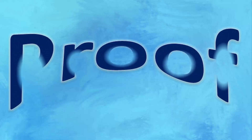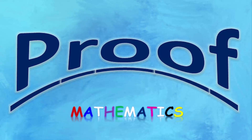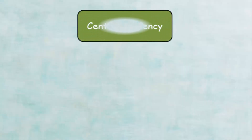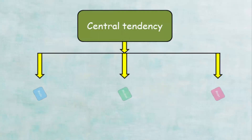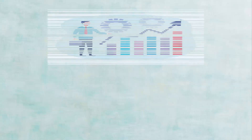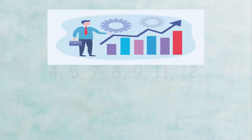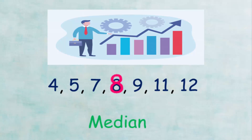Hello, welcome to a Proof Learning channel. In this video we will explain what is the median and how to find it. The median is one measure of central tendency, along with the mode and arithmetic mean, and one of the important definitions in statistics. The median helps us find the value that divides a set of values, and it is used by those who are interested in statistics.